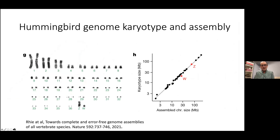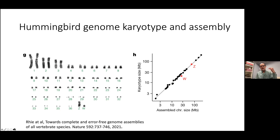Here's a hummingbird genome karyotype, and on the right is a plot showing the correlation between estimated chromosome size based on physical visualization through a microscope versus the genome assembly size. There's very good correlation between the predicted assembly size and what they actually see — this is a validation and quality control aspect of doing these assemblies. The largest chromosome was about 150 million base pairs and the smallest were under 3 million base pairs.